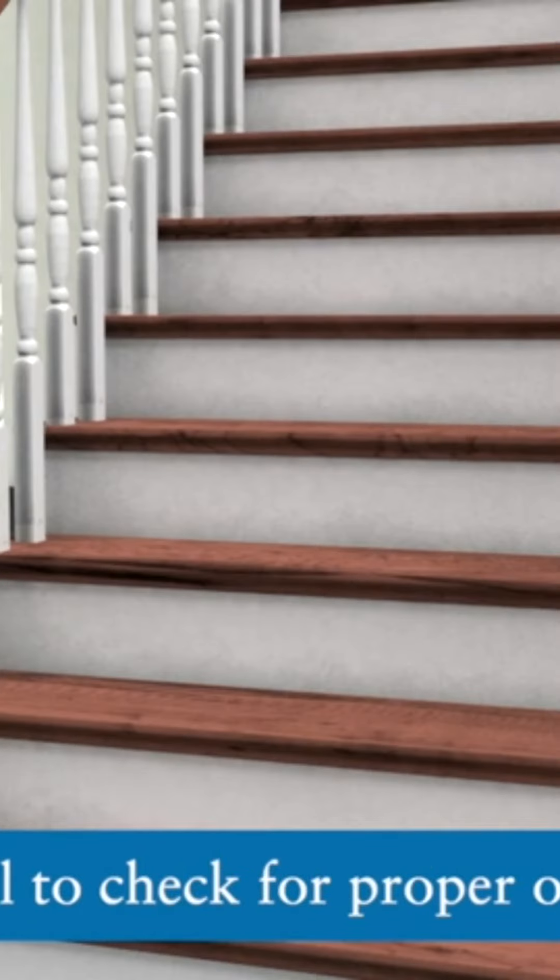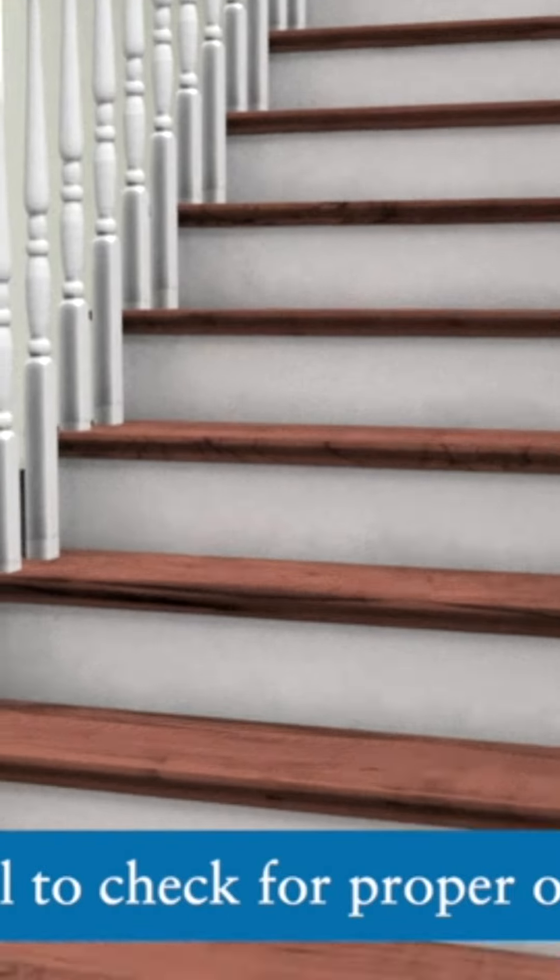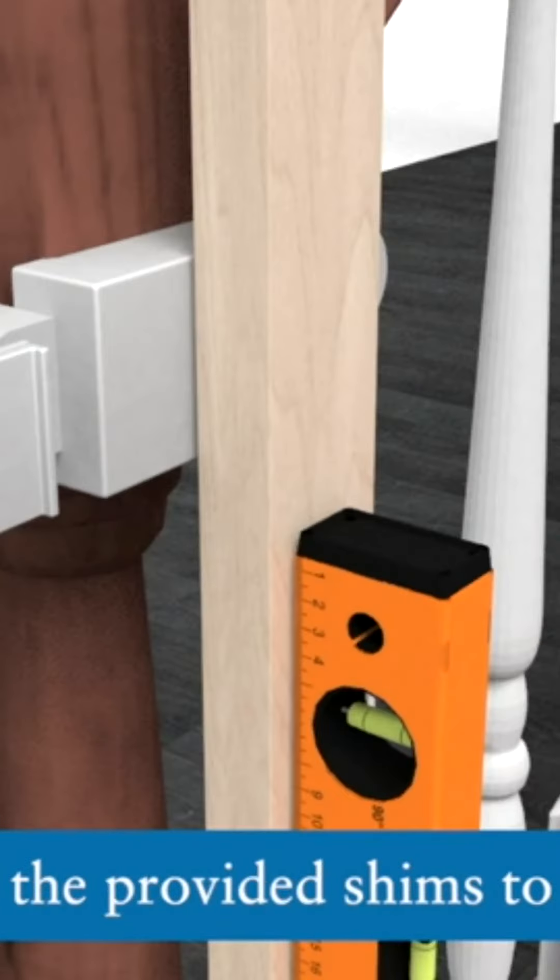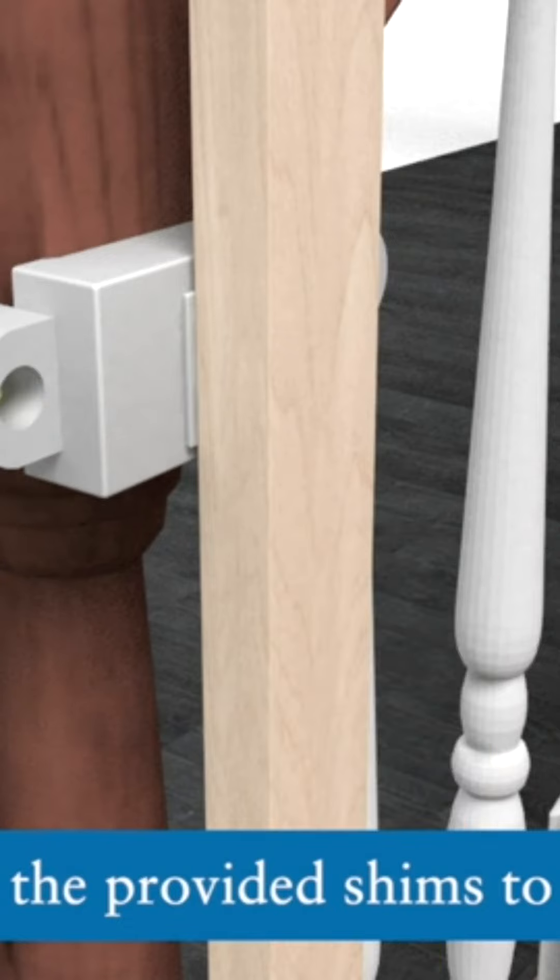Place the wood mounting strip against both clamps. Use a level to check for correct orientation. If necessary, use one or both of the provided shims to ensure the wood strip is completely vertical.